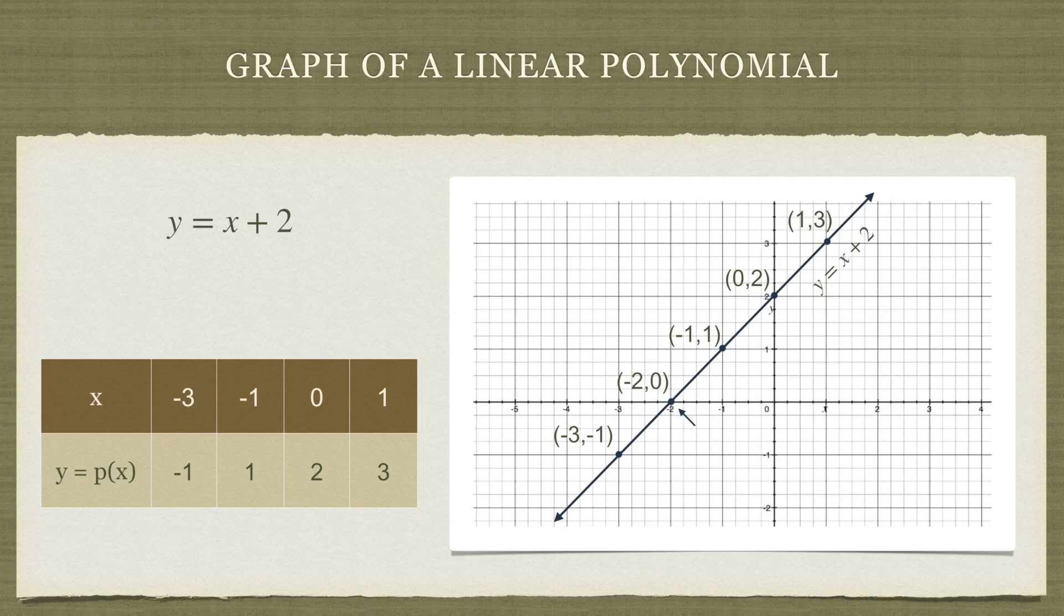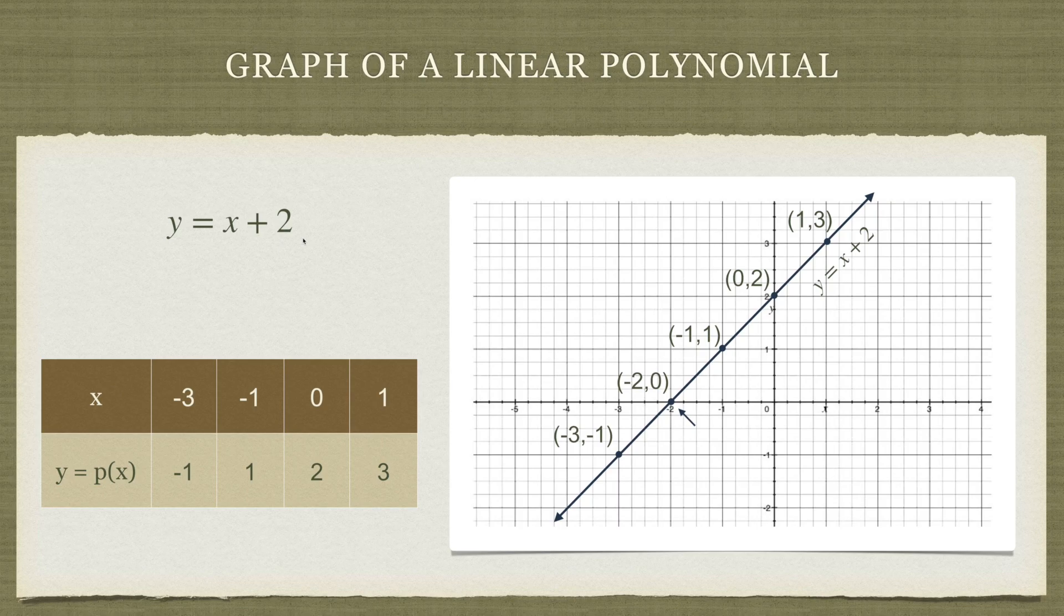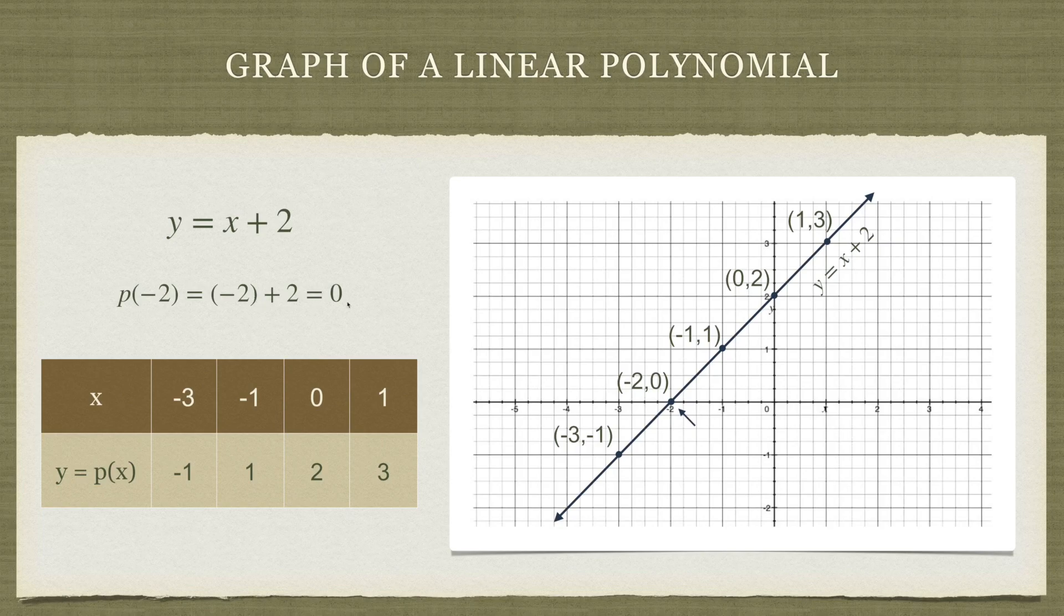Just to double check, we can replace x with -2 in our original polynomial and see what value we get. If we do that, we will see P(-2) is -2 + 2 = 0. Indeed, -2 is the zero of the polynomial.